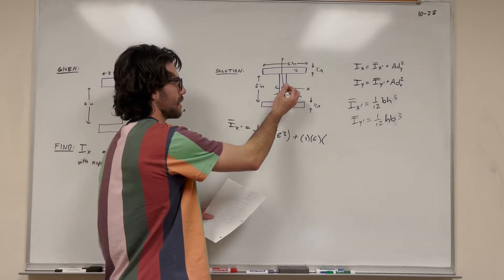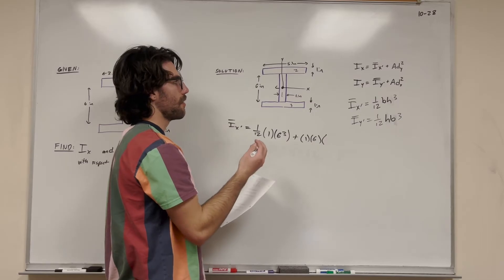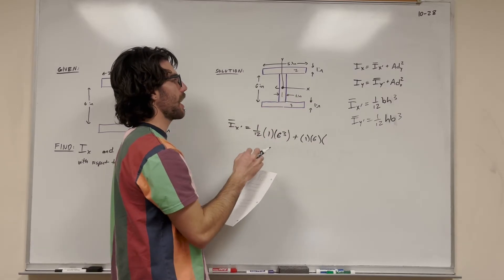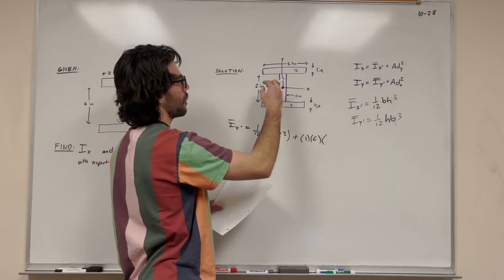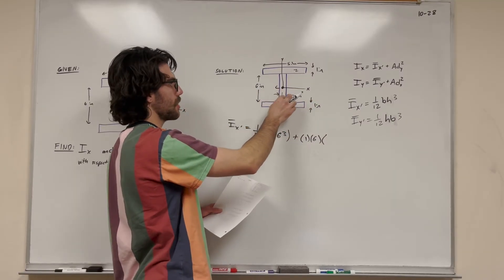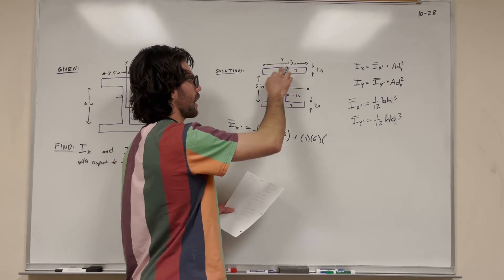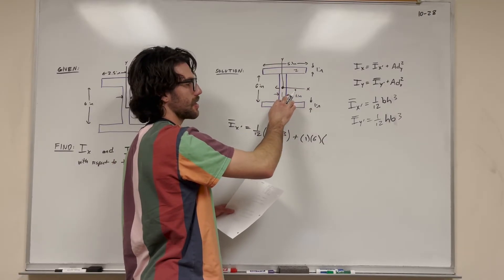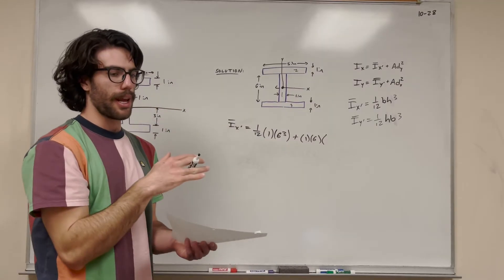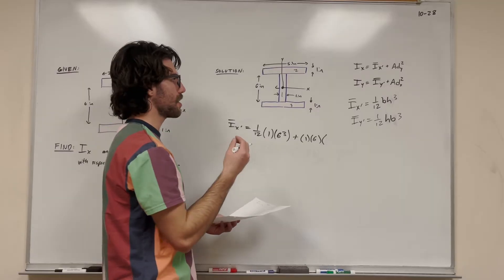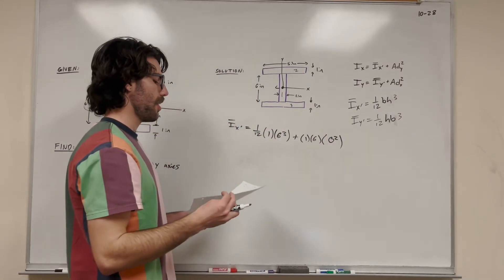Distance y is the distance from the center of mass of the whole shape to the center of mass of the individual shape. The I-beam is symmetrical across the x-axis, so its center of mass lies right in the center, 3 inches up from the bottom. This rectangle is 6 inches tall, so it also has a center of mass 3 inches from the bottom. Their centers of mass lie on the same plane, so distance y equals 0 squared.